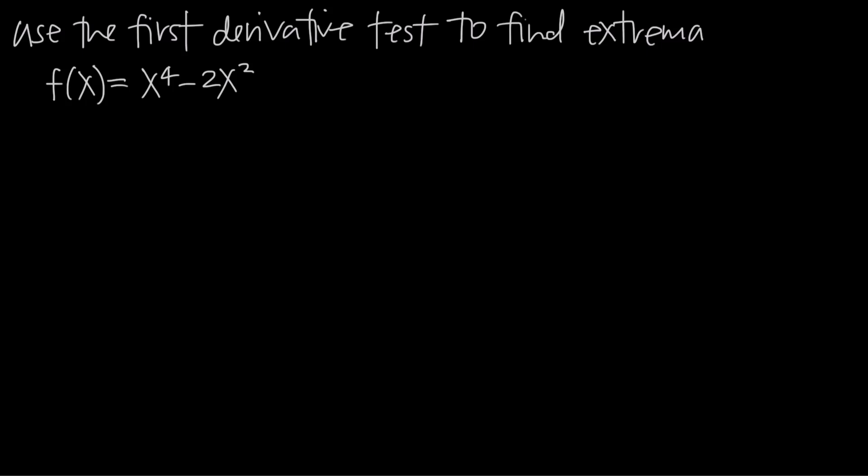In this video we're talking about the first derivative test. We've been asked to use the first derivative test to find any extrema of the function f(x) = x⁴ - 2x². We call it the first derivative test because we use the first derivative to test the critical points of the function to say where the function is increasing and decreasing, and therefore to draw conclusions about extrema, which are local and global maxima and minima.